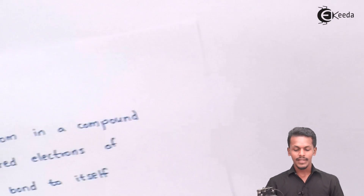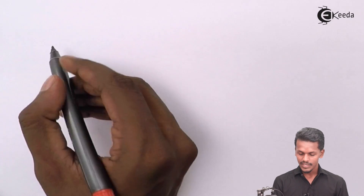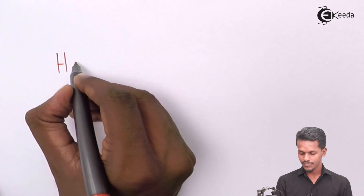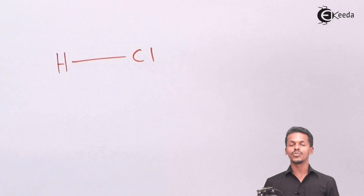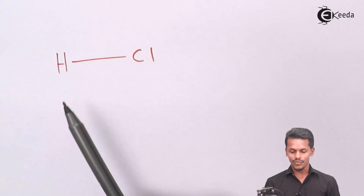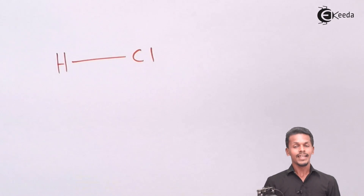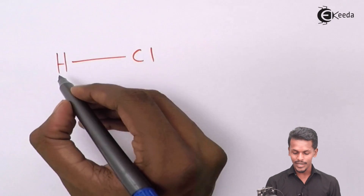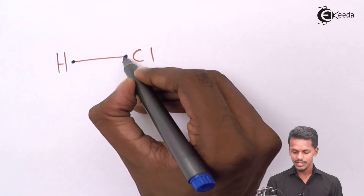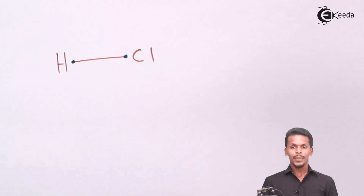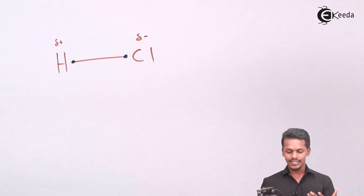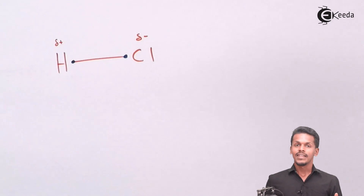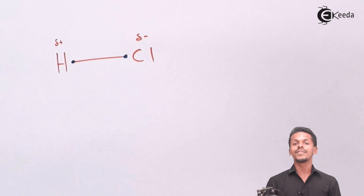Let me explain this with an example. Suppose we have a compound like HCl. HCl is a compound that consists of a covalent bond, and in this covalent bond there are two electrons, because each bond is made up of two electrons. H is usually partially positive while Cl is partially negative.